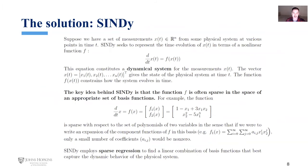So I'm going to apologize up front. This is a very math introduction to CINDY. Suppose we have a set of measurements x(t) that are in the set of real numbers R^n from some physical system at various points in time t. CINDY will seek to represent the time evolution x(t) in terms of a nonlinear function f, where dx/dt = f(x(t)). This equation constitutes a dynamical system of the measurements of x(t). Thus, the vector x(t) gives the state of the physical system at time t, a specific instance of time. This function f(x(t)) will constrain how the system will evolve in time.